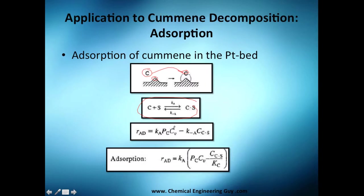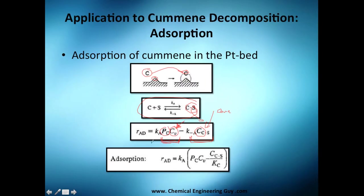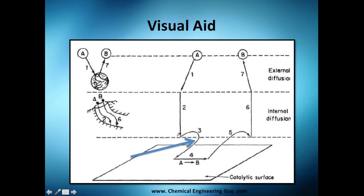Cumene here, the active site is going to be adsorbed. From left to right we use partial pressure, and from right to left we use concentration. We need to account for the free binding sites and the concentration of those binding sites. This is a function of the binding site and of the concentration of Cumene in the gas phase. You get this rate equation for step 3.